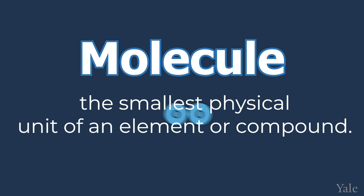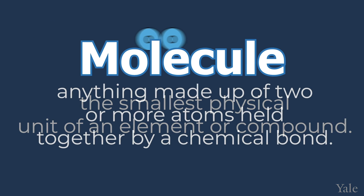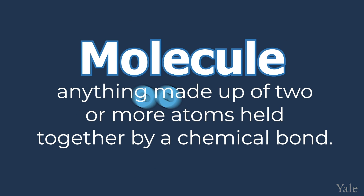Oxygen exists in a diatomic molecular form with two oxygen atoms. Oxygen, in its elemental form, is an example of a molecule because its two atoms are chemically bound together. A molecule is the smallest physical unit of an element or compound, and it is anything made up of two or more atoms held together by a chemical bond. So if atoms are held together by bonds, it also makes sense that these bonds can be broken and allow different atoms to then bond together, almost like Lego blocks.